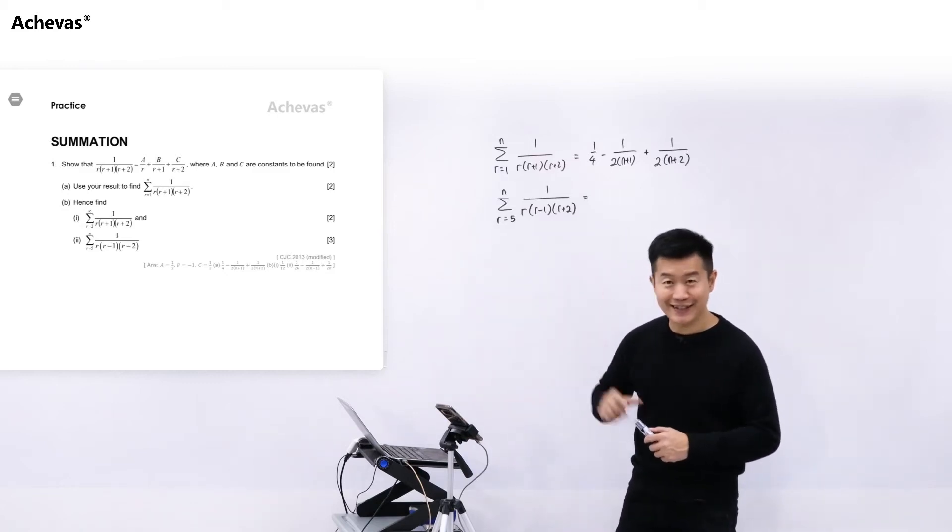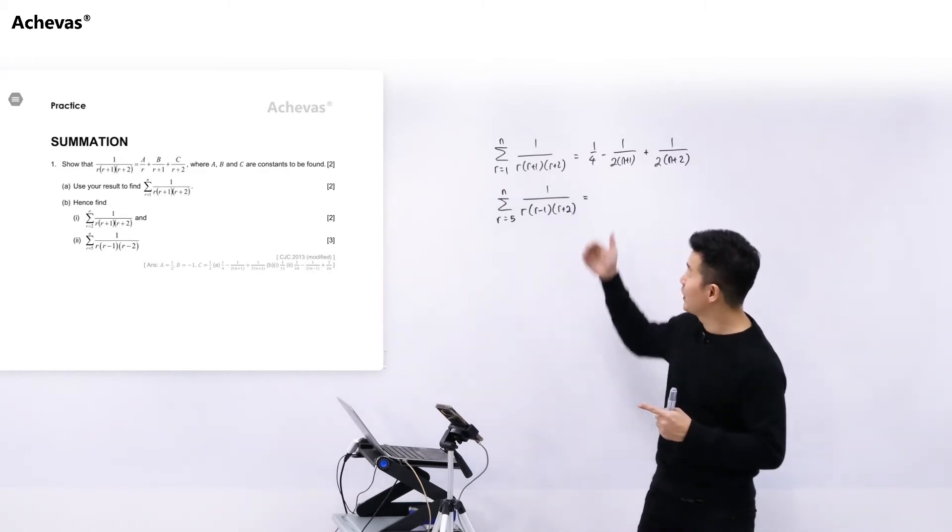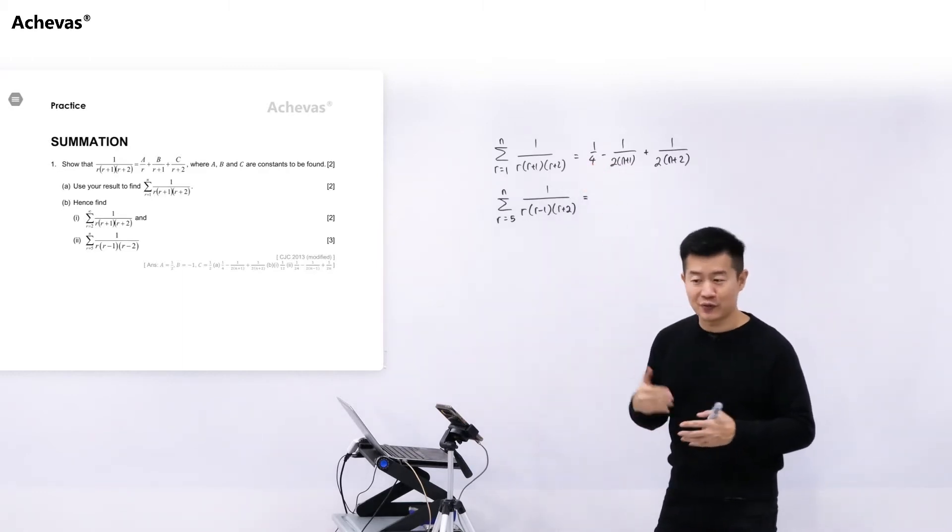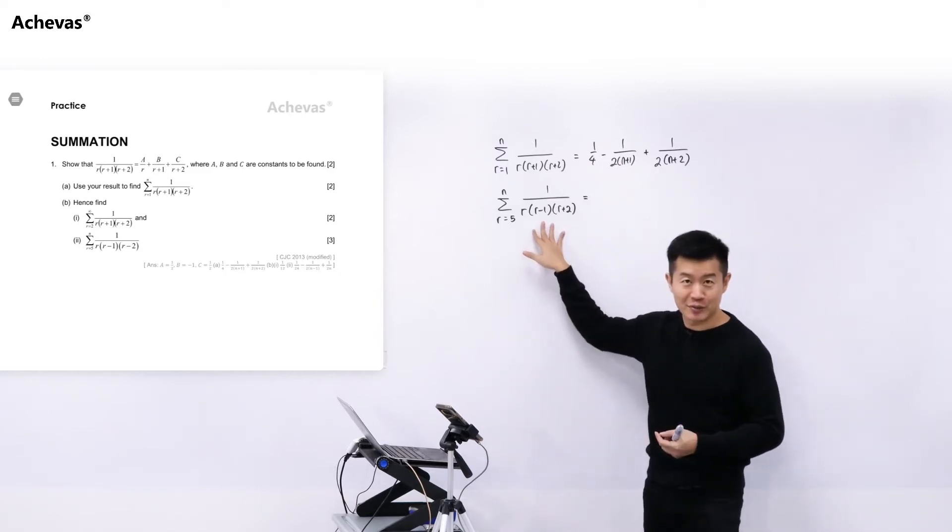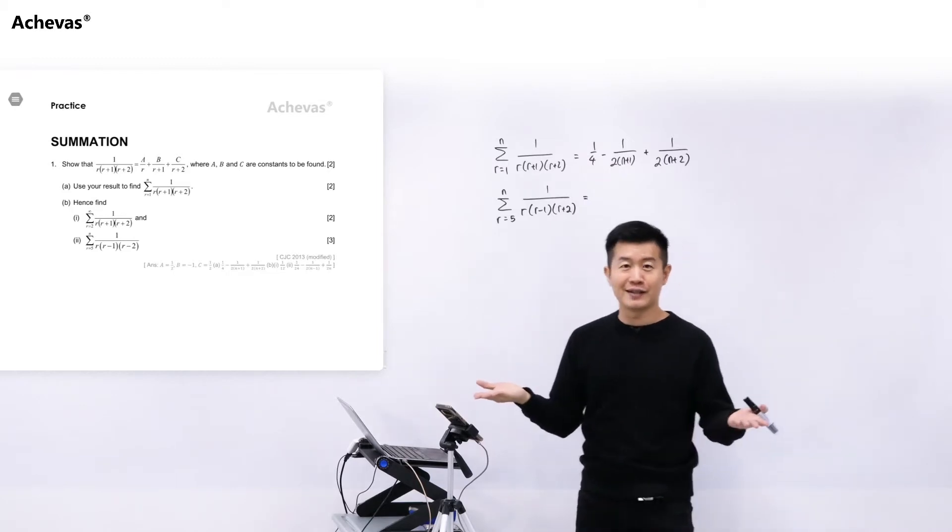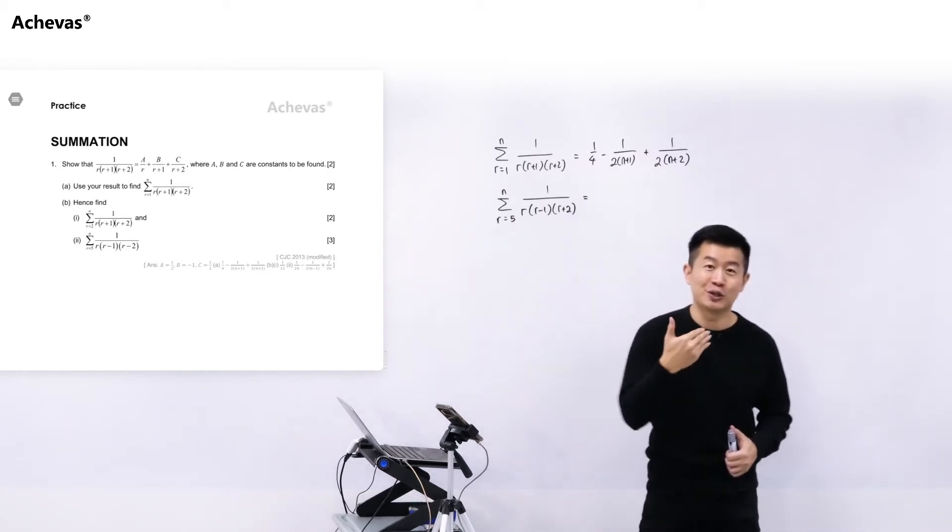Okay, Roy says that he has seen this kind of question before because in ACGC's tutorial, he has been doing this kind of question where you have gotten a result from the method of difference and you are supposed to work on another summation. Roy is saying that he knows this is the replace R by R plus P strategy, but I can understand Roy because you find this strategy very difficult to execute because you don't even know how it works.